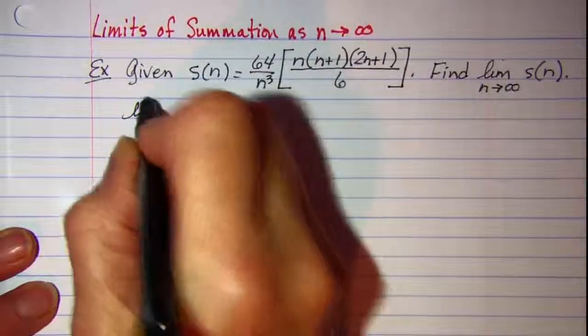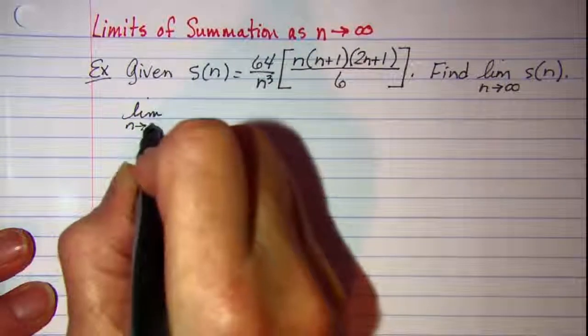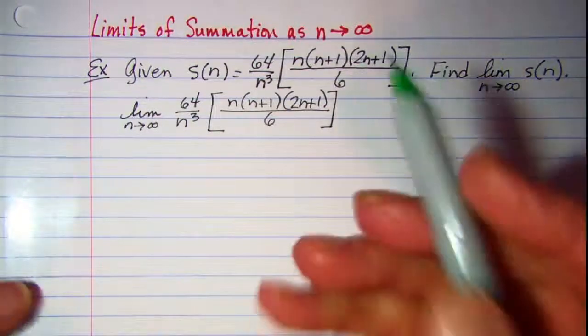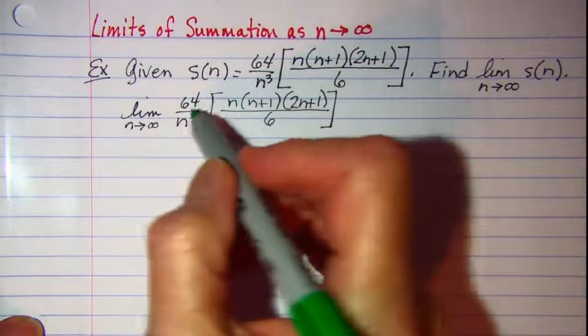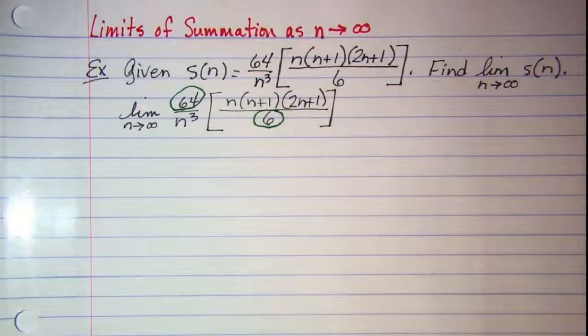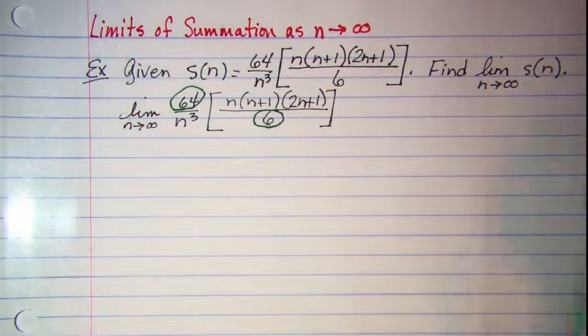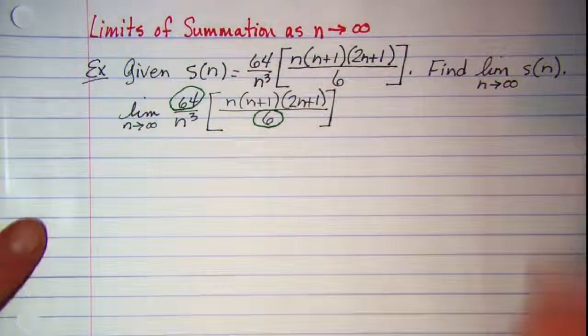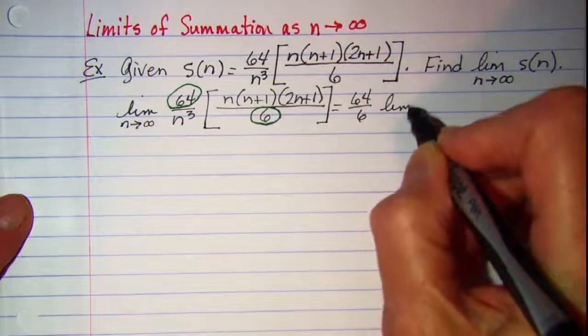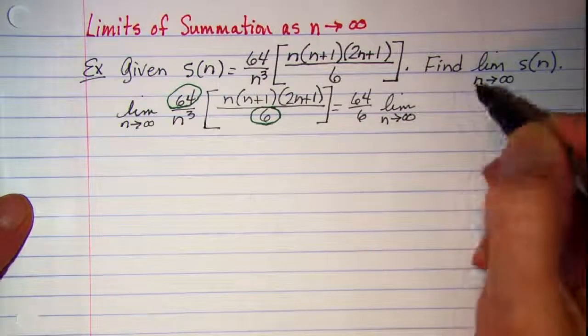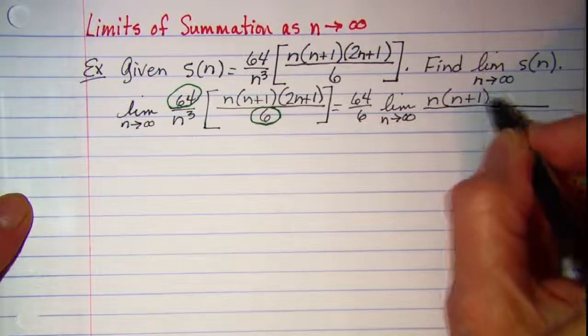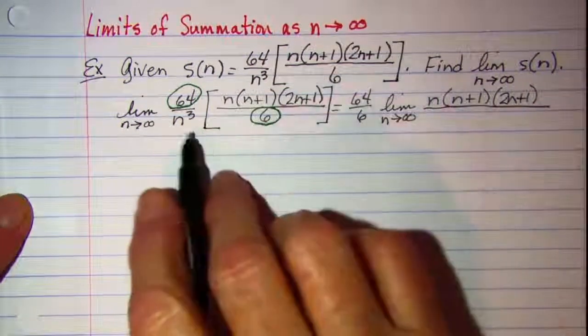So first of all let me just write the limit as n approaches infinity. Now our first step is to see if we have any factors that are constants. In this case we can see that we have a 64 and then 6, so the 64 in the numerator and the 6 in the denominator can be pulled out in front, and that will give us 64 over 6 times the limit as n approaches infinity of n times n plus 1 times 2n plus 1 all over n cubed.